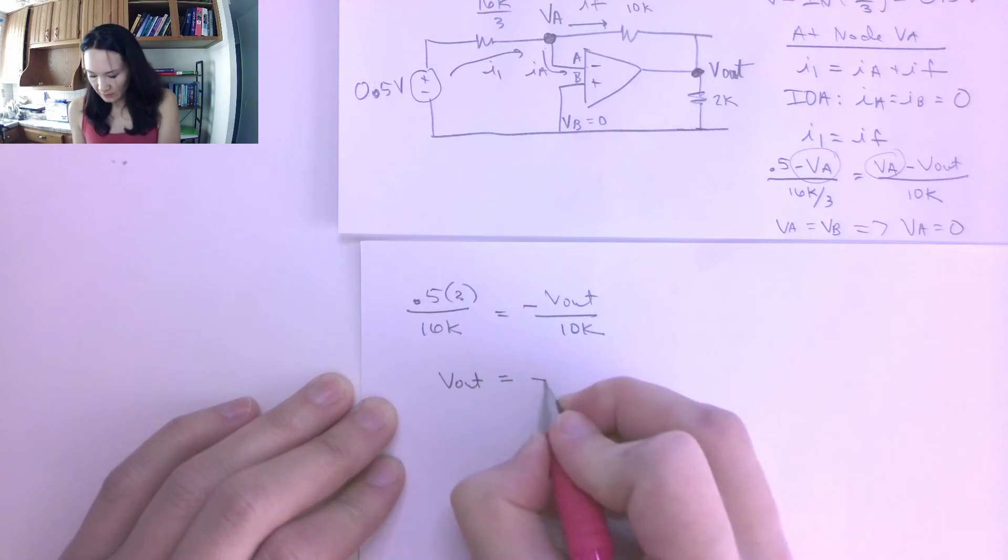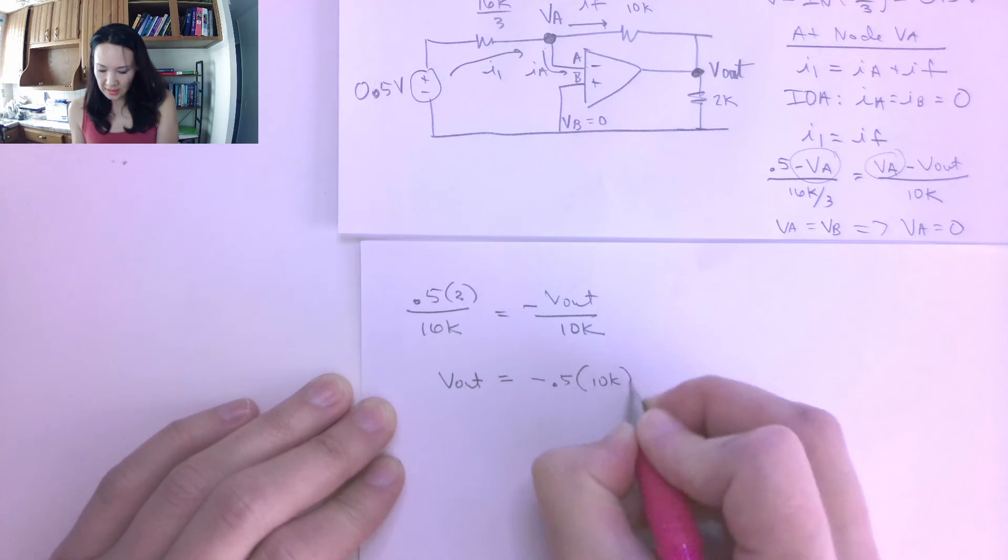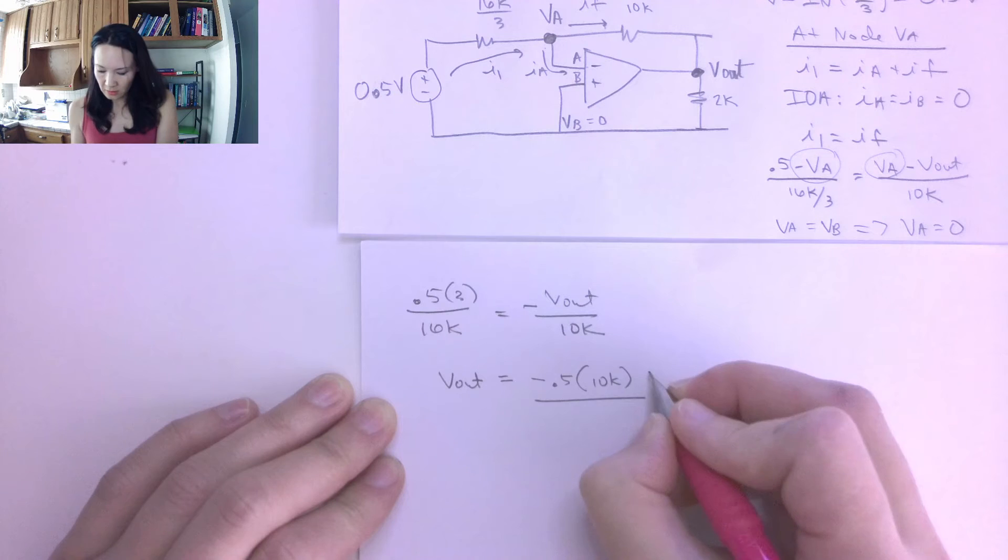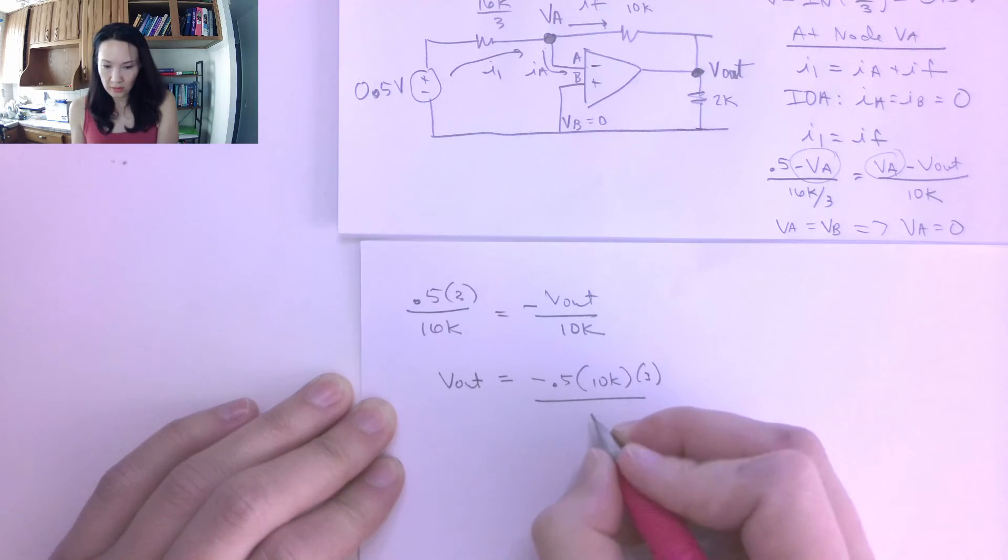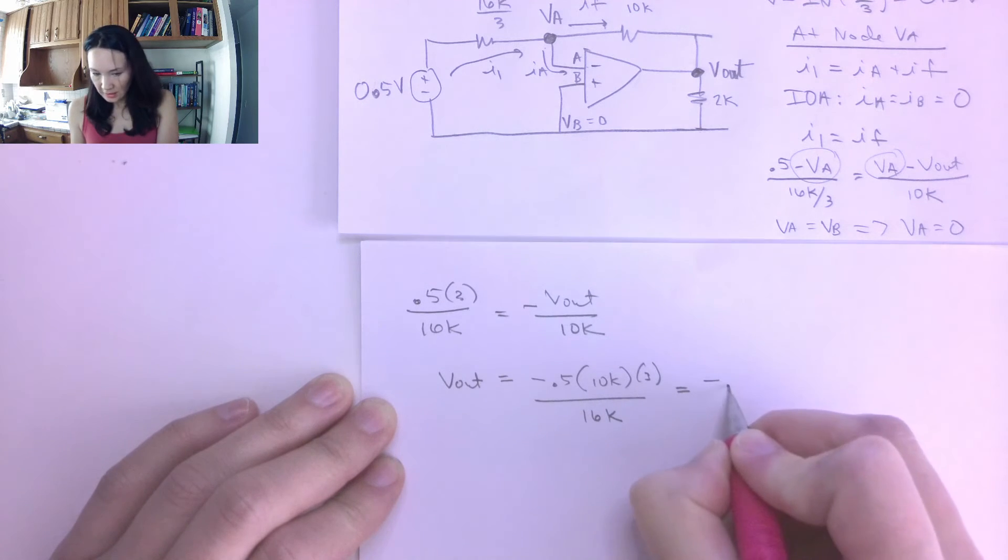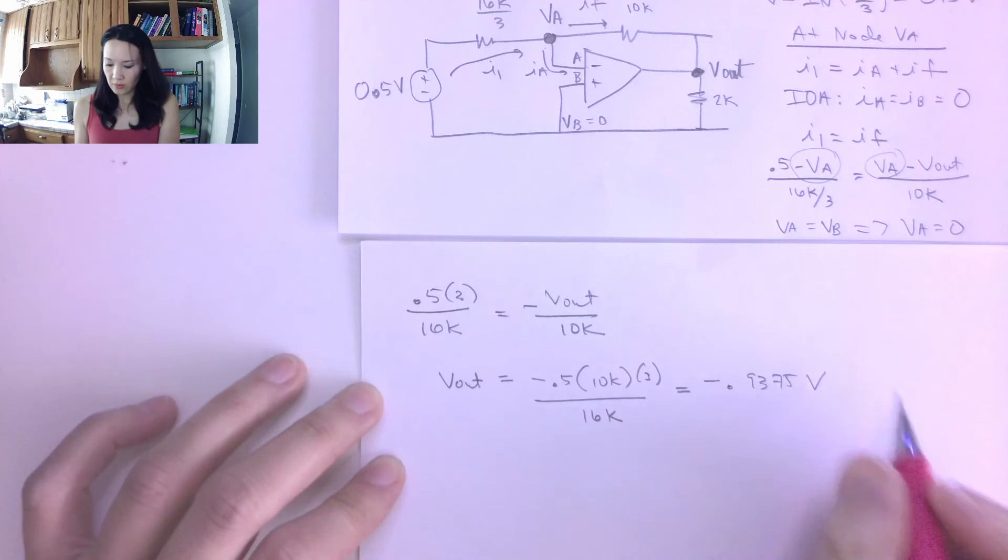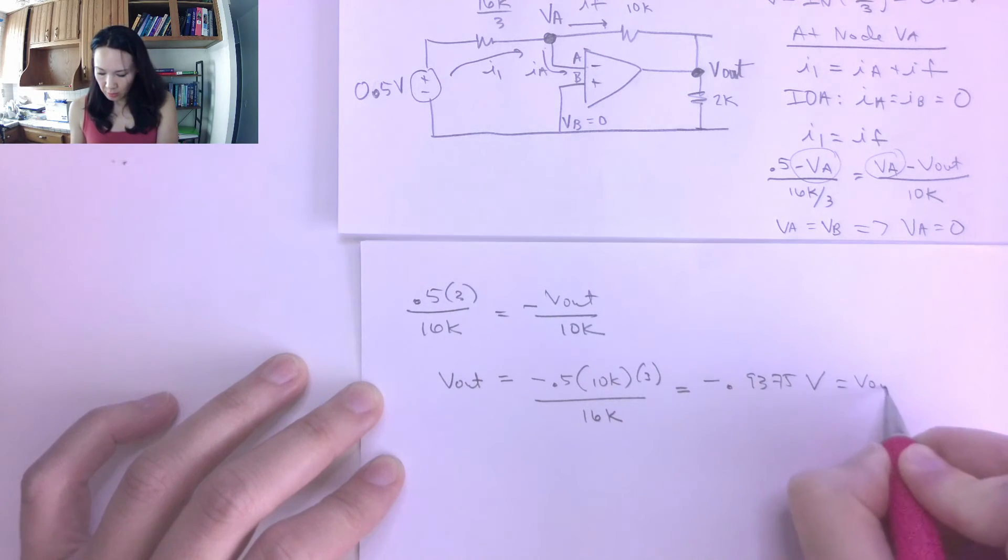it's going to be negative 0.5 times 10k over, and I have a 3 up here too, over 16k. So this is going to end up to be negative 0.9375 volts. Great, so I have my output voltage here, so that means that I can calculate the gain.